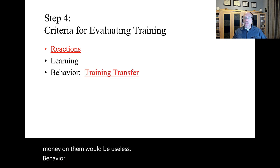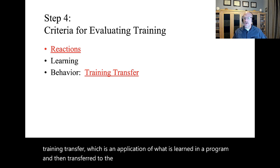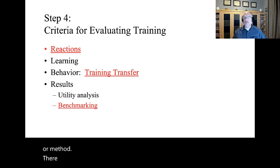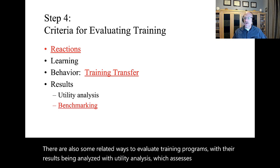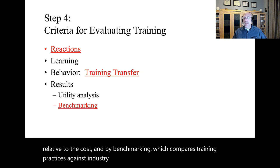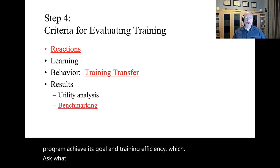Behavior on the job is the gold standard of training criteria. It involves training transfer, which is an application of what is learned in a program and then transferred to the conduct of the job. Training transfer is the most important criteria and should be the goal of every training program or method. There are also some related ways to evaluate training programs with their results being analyzed with utility analysis, which assesses the benefits relative to the cost, and by benchmarking, which compares training practices against industry leaders according to trainee activity — that is, how much training are we doing, does our program achieve its goal, and what resources are used to pursue training goals. With benchmarking, we can compare our results to others in our industry.